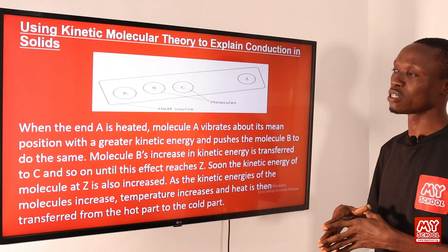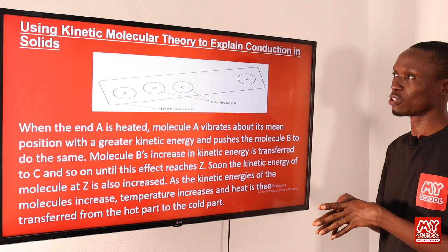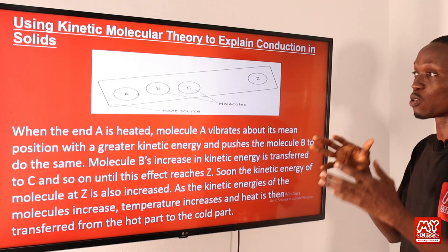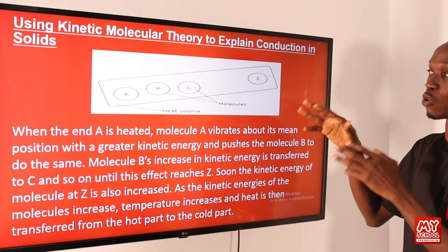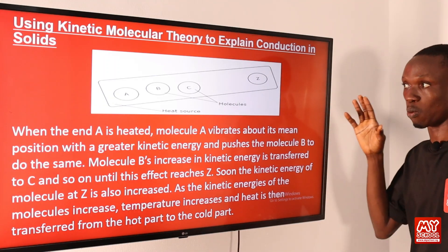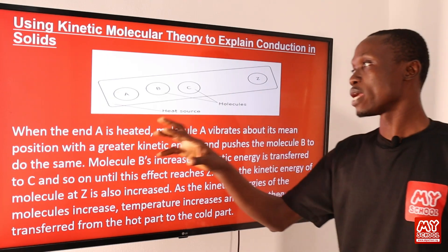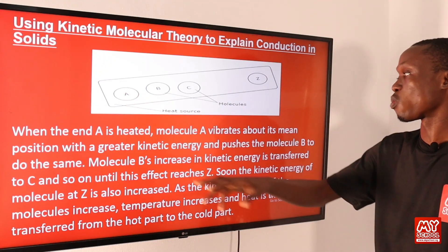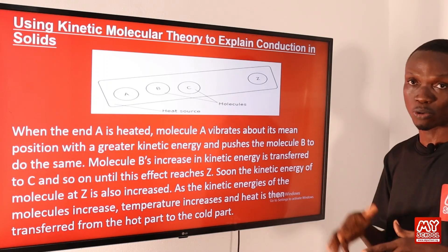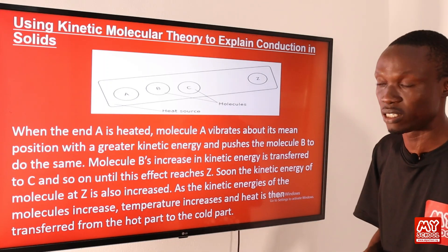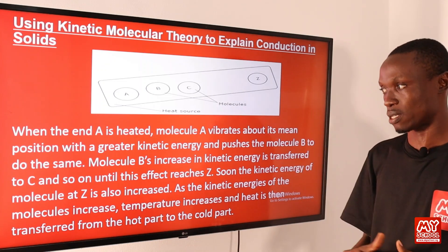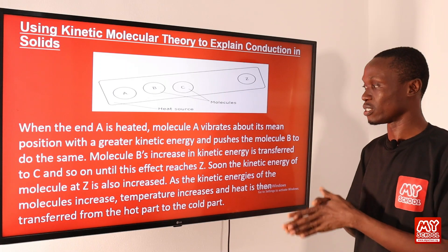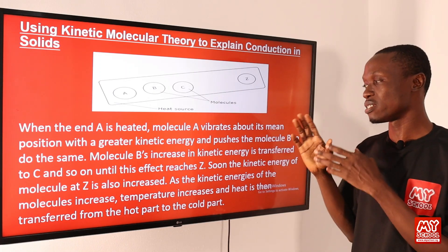We are now going to use the kinetic molecular theory to explain conduction of heat. This is a typical metal — a metal is made up of molecules, so we label those molecules for illustration purposes. When end A is heated, the molecule at point A will vibrate about its mean position with greater kinetic energy and pushes molecule B to do the same.